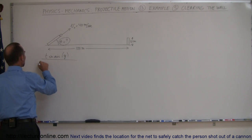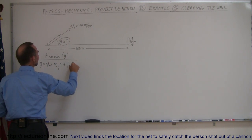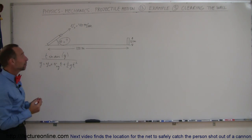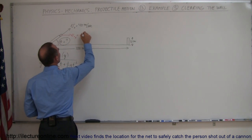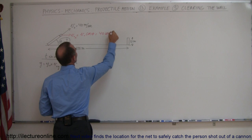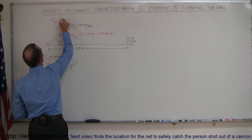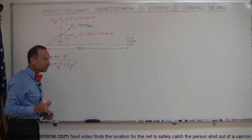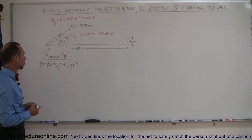For the y direction, we use y = y_initial + v_initial_y · t + ½g·t². Since the projectile is shot out at an angle, we need the x and y components of the initial velocity. The initial velocity in the x direction is v_initial · cos(θ) = 40cos(θ), and in the y direction, v_initial_y = v_initial · sin(θ) = 40sin(θ), where 40 means 40 meters per second.